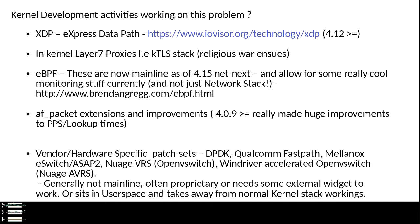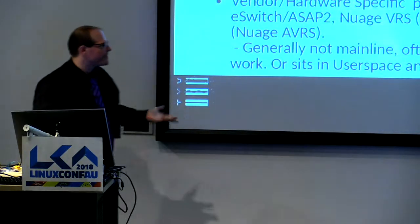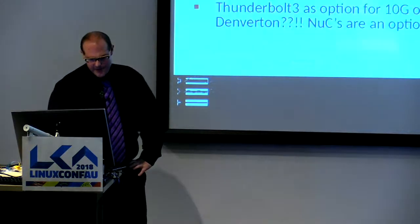So what is going on in this area? XDP — Express Data Path — is basically aiming to give you effectively IP tables mangle rules inside the kernel. You can do some really cool things with it right now and it's in mainline as of 4.12, with more actions being extended. EBPF is basically DTrace on steroids and it's neat — now mainline as of 4.15. AFPacket extensions: if you're running kernels older than 4.09, go and upgrade them. 4.09 added a whole bunch of really good improvements for latency and process packing. And then there's vendor-specific stuff: DPDK, Qualcomm Fastpass, Mellanox, Nuage, Wind River accelerated Nuage.